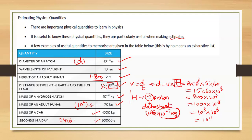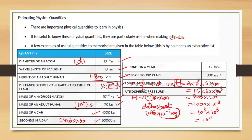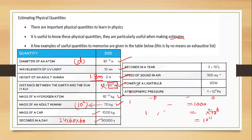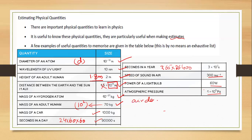The mass of a car is 1000 kg. There are 86,400 seconds in a day — calculated as 24 hours × 60 minutes × 60 seconds. Multiplying by 365 gives approximately 31,536,000 seconds in a year. The speed of sound is 300 m/s. The power of a light bulb is around 60 W. Atmospheric pressure is 10⁵ Pa. Air density is 1 kg/m³, and water density is 1000 kg/m³.